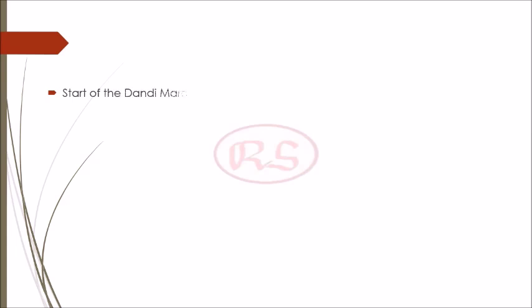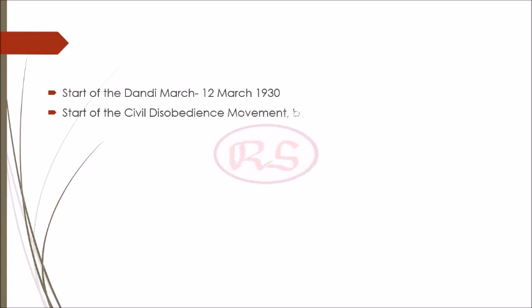He started his Dandi March from Sabarmati Ashram to the Dandi coast. The Dandi March started on 12th March 1930. He travelled for 24 days from Sabarmati Ashram to the Dandi coast and reached there on 6th April 1930. On reaching Dandi, he broke the famous Salt Law and started the Civil Disobedience Movement.